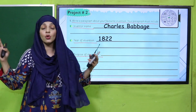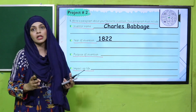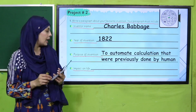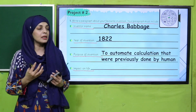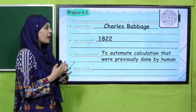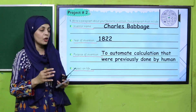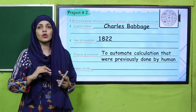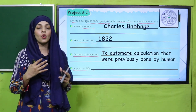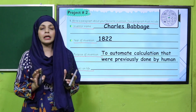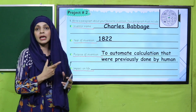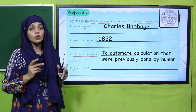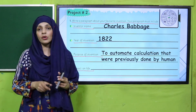At that time, the computer looked very different from what you see today in small sizes — it was very huge, occupying many rooms. The purpose of its invention was to automate calculations that were previously done by humans, and to collect and process data.